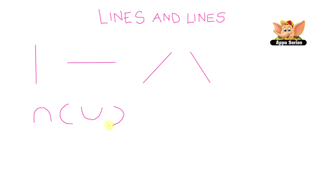Why don't we try drawing something using these different lines? Let's start by drawing two curved lines — and there's another one in a different direction. Now let's try drawing a standing line, then two slanting lines on each side, then two sleeping lines on each side. We'll draw one more sleeping line and two standing lines.